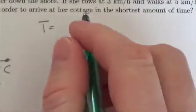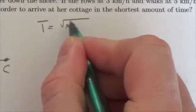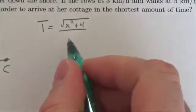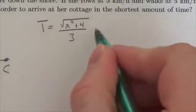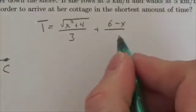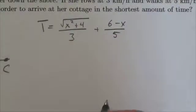And so the amount of time that it takes for her is going to be the distance that she rows divided by the speed that she rows at. And I believe she rows at three kilometers an hour, plus the distance that she would have to walk divided by the speed at which she walks. So distance over speed should give us time.